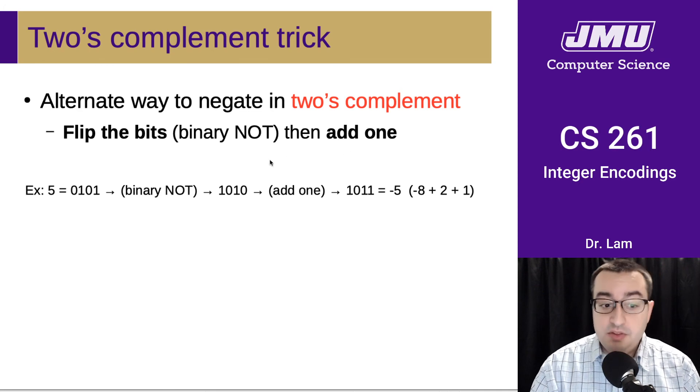So flip the bits, so here is 5. If we wanted to negate this to get the representation of negative 5, then we flip all the bits. So this will be 1010.